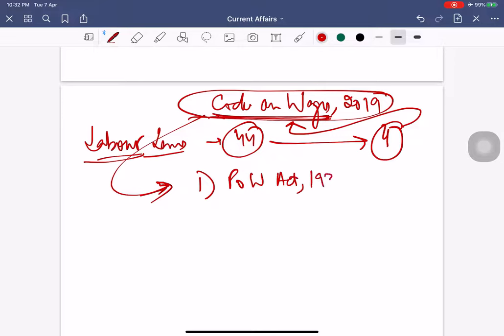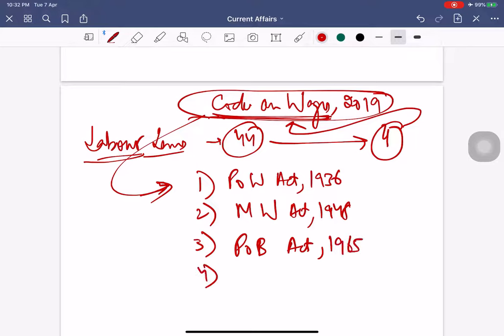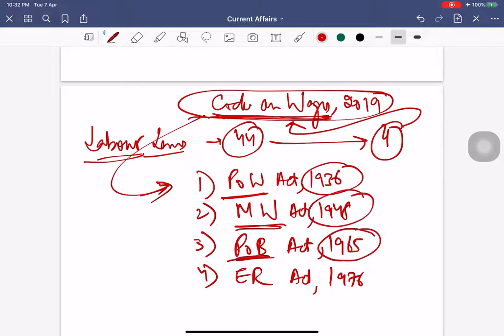First is Payment of Wages Act 1936, second is Minimum Wages Act 1948, third is the Payment of Bonus Act 1965, and fourth is the Equal Remuneration Act of 1976.